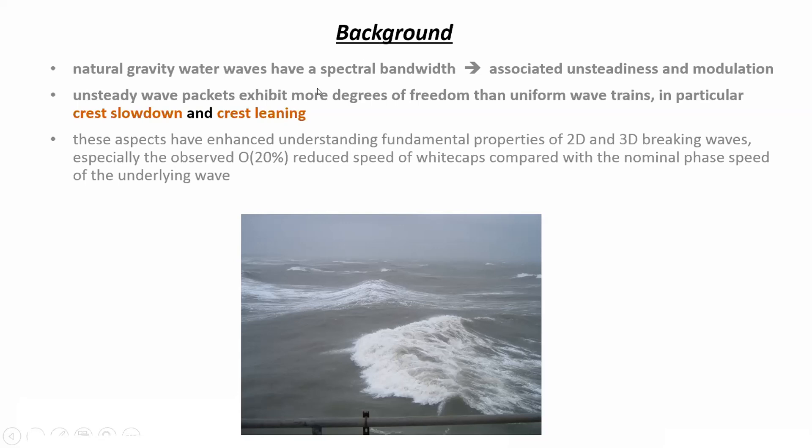Natural gravity water waves, as opposed to academic water waves, have a spectral bandwidth which leads to associated unsteadiness and modulation. Unsteady wave packets exhibit more degrees of freedom than uniform wave trains, with particular phenomena: crest slowdown and crest leaning. These aspects have enhanced our fundamental understanding of properties of 2D and 3D breaking waves, especially the observed 20% reduction of speed of whitecaps compared with the nominal phase speed of the underlying wave that supports the breaker.